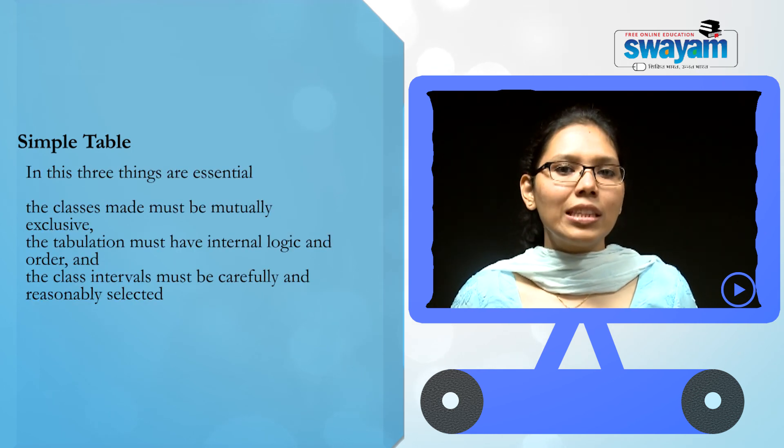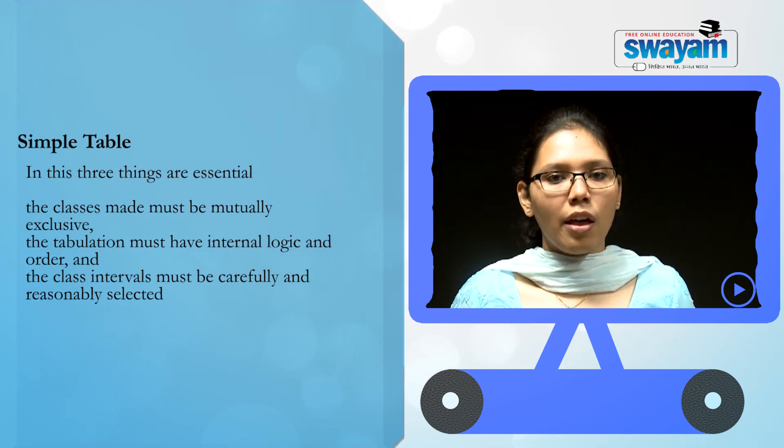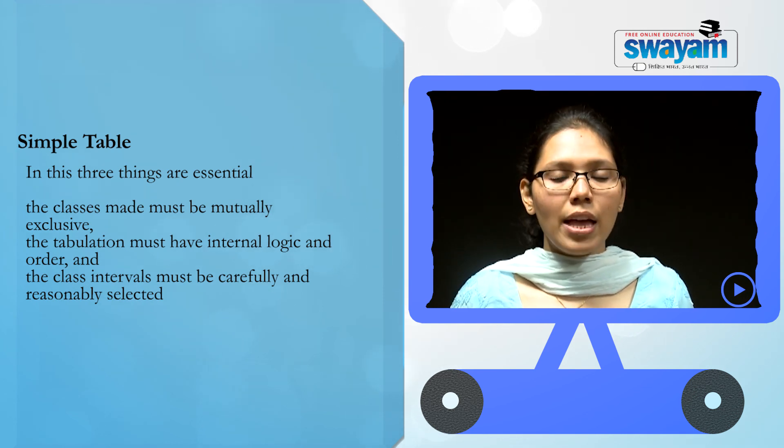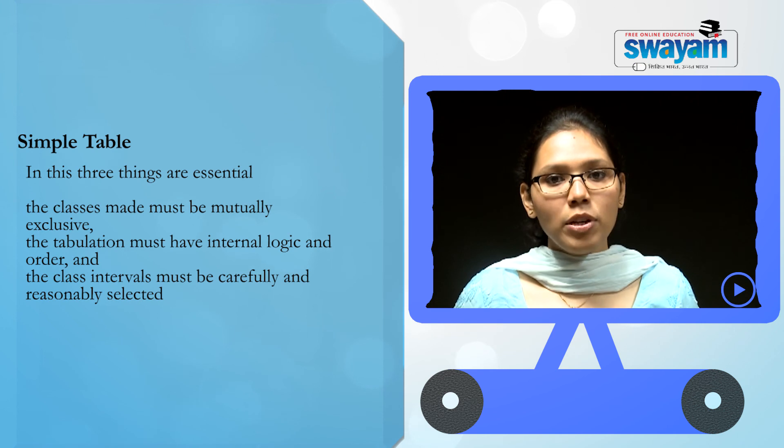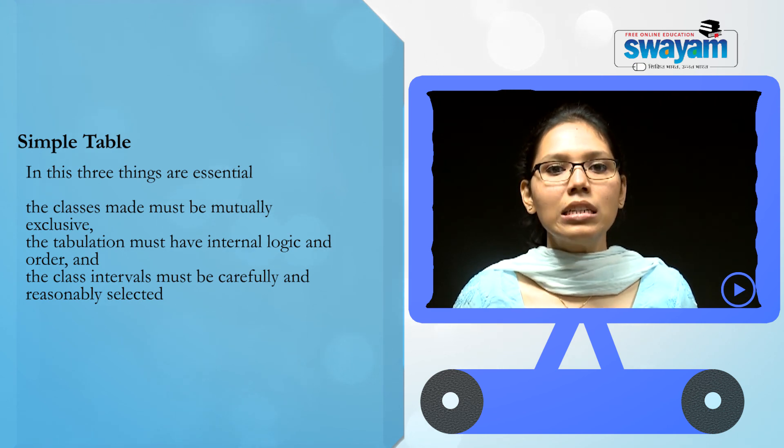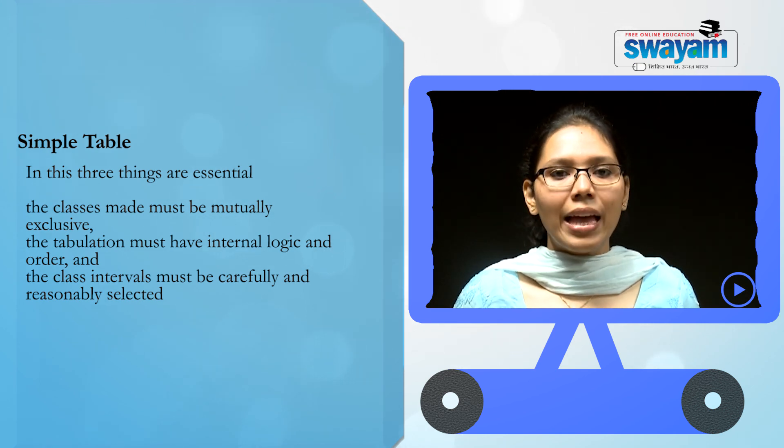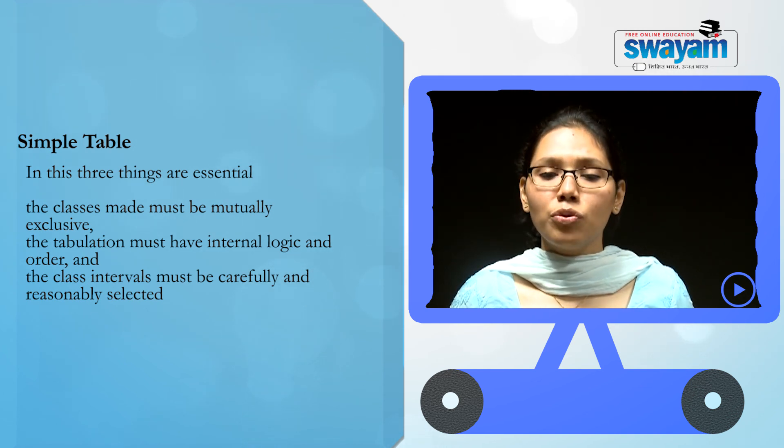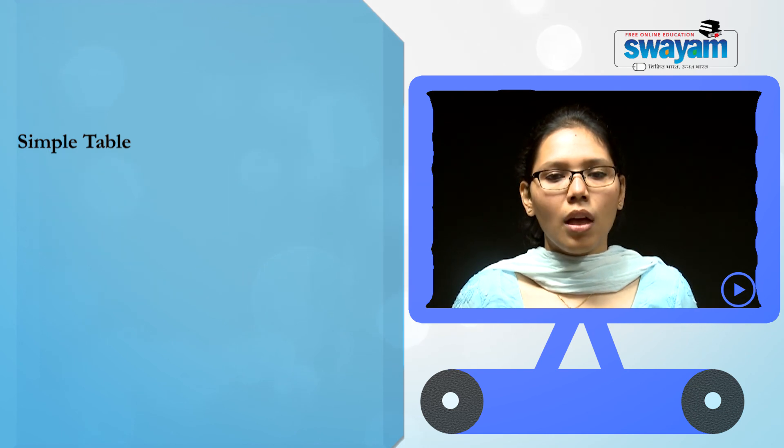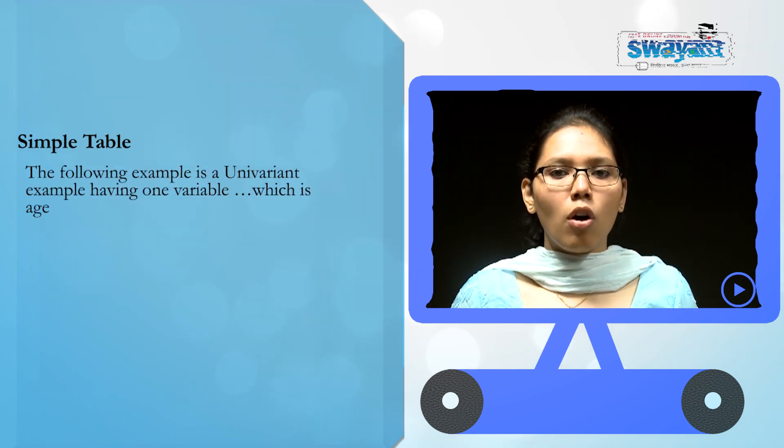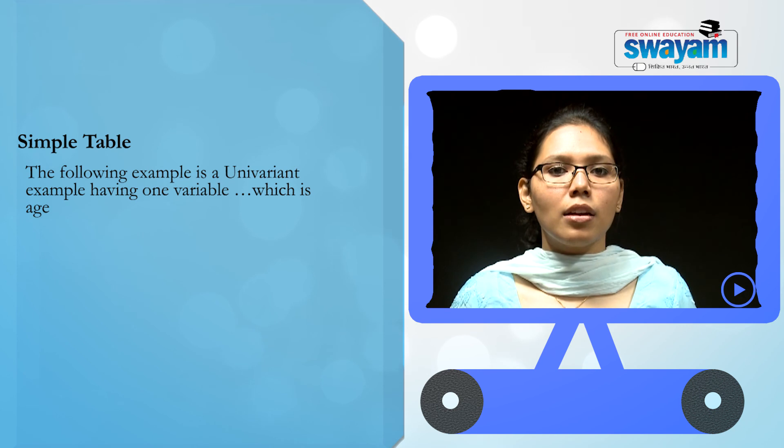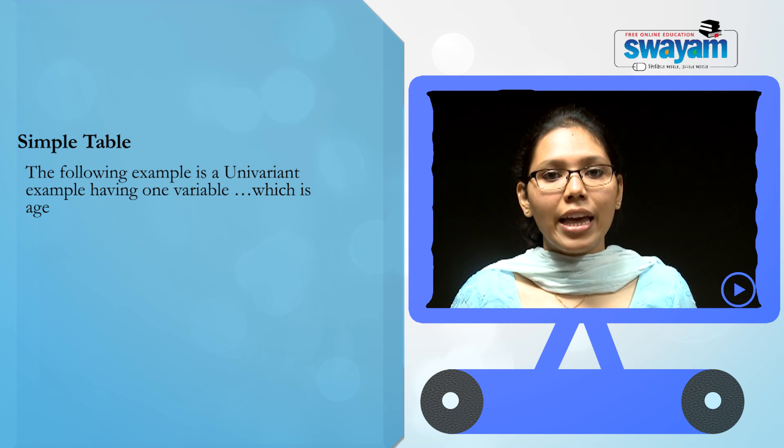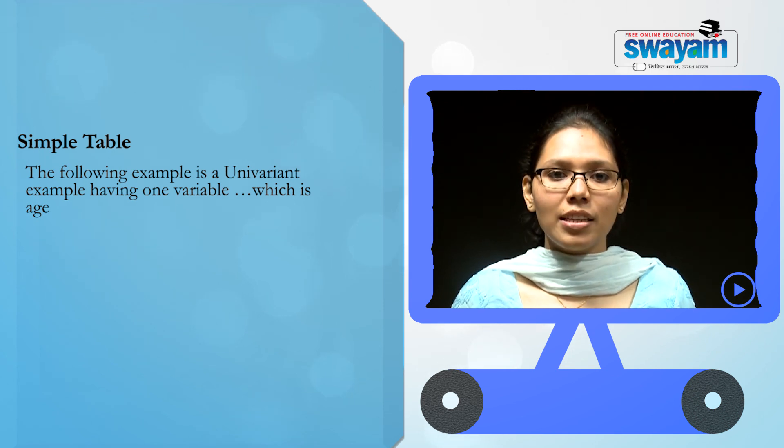In this, three things are essential. First, the classes made must be mutually exclusive. Second, the tabulation must have internal logic and order. And third, the class interval must be carefully and reasonably selected. The following is an example of a univariate simple table, meaning that it has one variable. In this table, the variable is age.